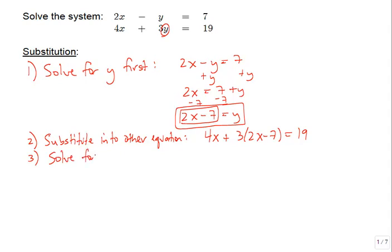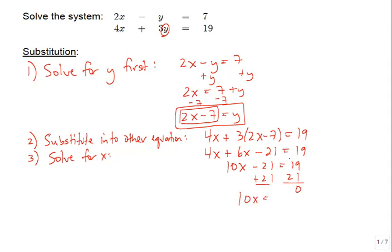We distribute: 4x plus 6x minus 21 equals 19. Combine like terms, then add 21 to the other side, giving us 40. Dividing through by 10, we get x is equal to 4.